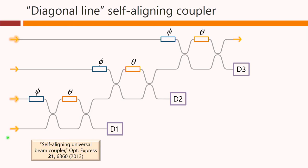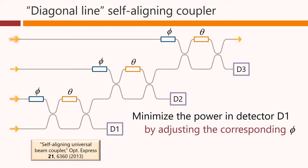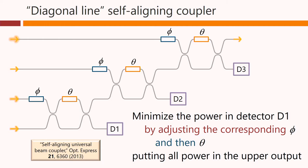Now we can take the next step, which is to combine multiple interferometers, for example in a chain or diagonal line. Here we have a diagonal line of three Mach-Zehnders: one here, one here, and one here. We have four input waveguides with light shining into each one of them, all mutually coherent. And we have one waveguide at the right where we hope to look for the output, and we also have three detectors here. So we start by minimising the power in detector D1 by adjusting the corresponding phi and then the corresponding theta, putting all the power now in the upper output of this Mach-Zehnder. And that changes the power in the output at the far right at the top.